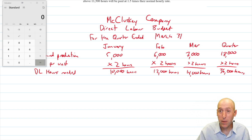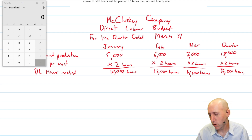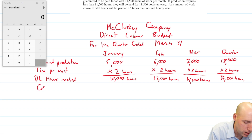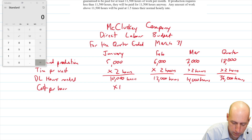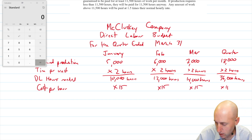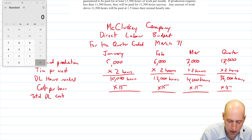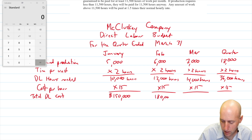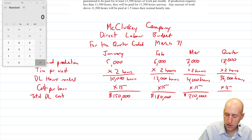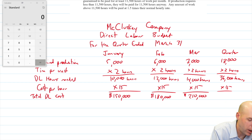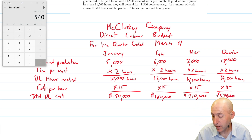As soon as I know the hours needed, I can figure out how many people I need — if they work an eight-hour day over roughly 90 days in a quarter — but we can also determine our cost. The cost per hour is $15. So the total direct labor cost: 10,000 × 15 = $150,000; 12,000 × 15 = $180,000; 14,000 × 15 = $210,000. And 150 + 180 + 210 = $540,000. That is the direct labor budget.